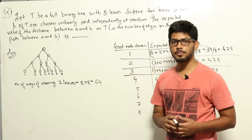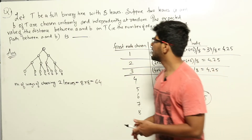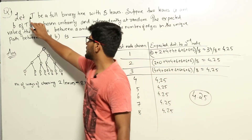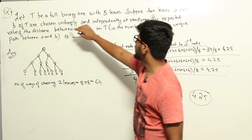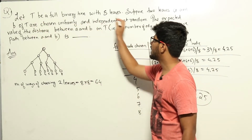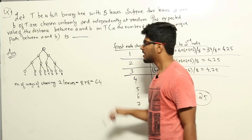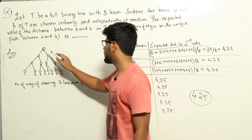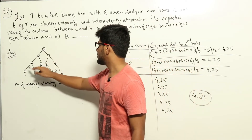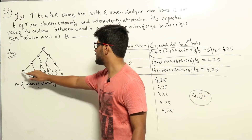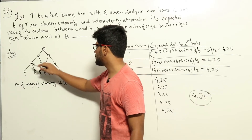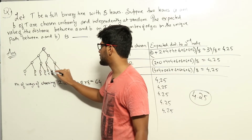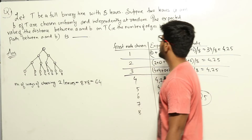This is a question from data structures. Here they are giving us a tree T which is a full binary tree with 8 leaves. A full binary tree with 8 leaves will look like this — this particular tree is full and it has 8 leaves.